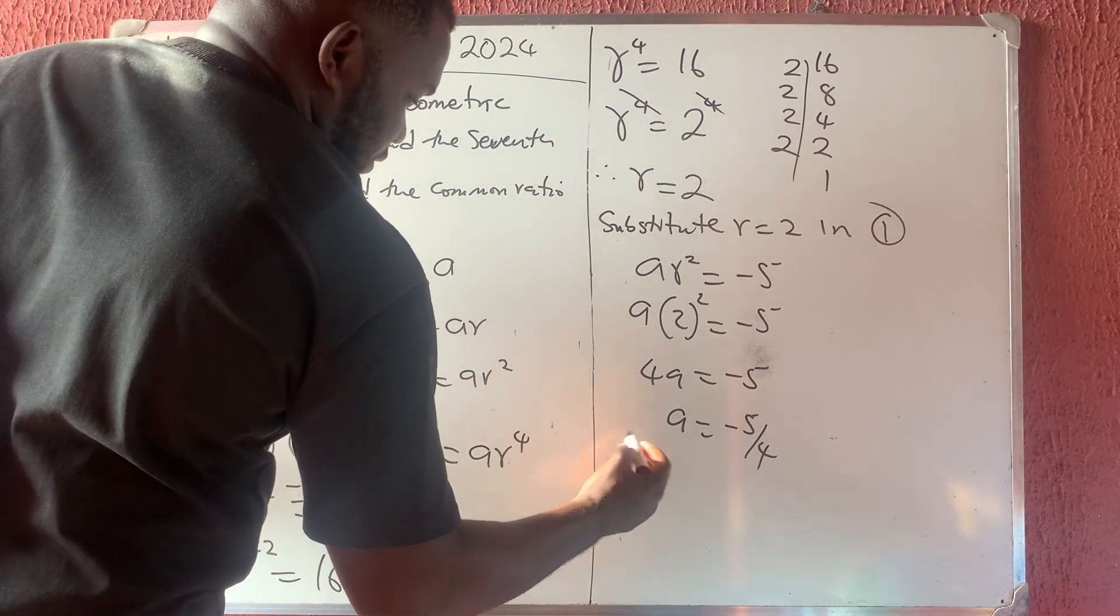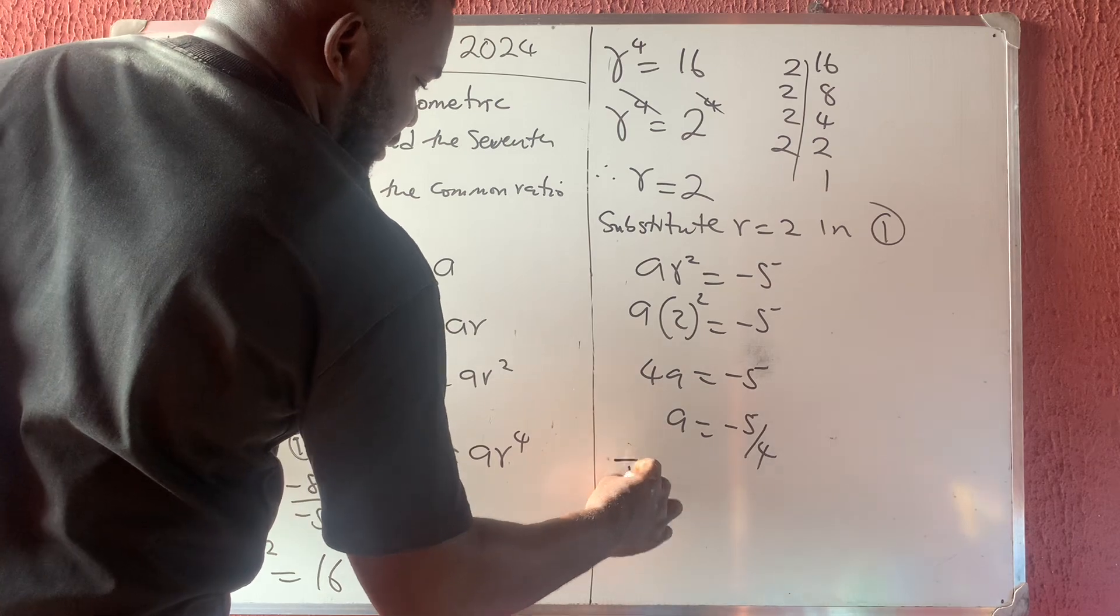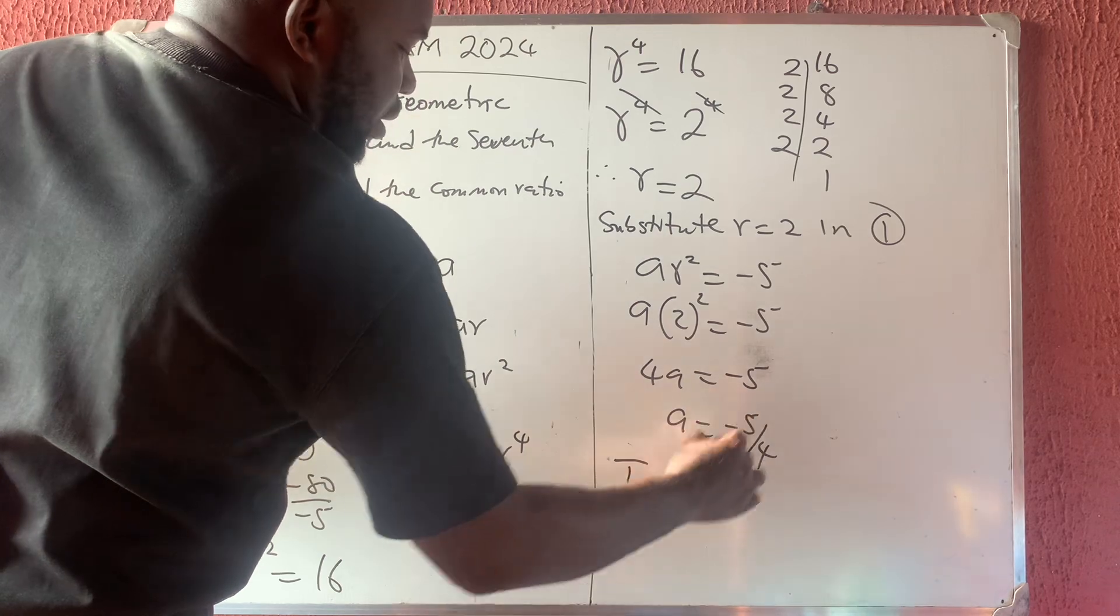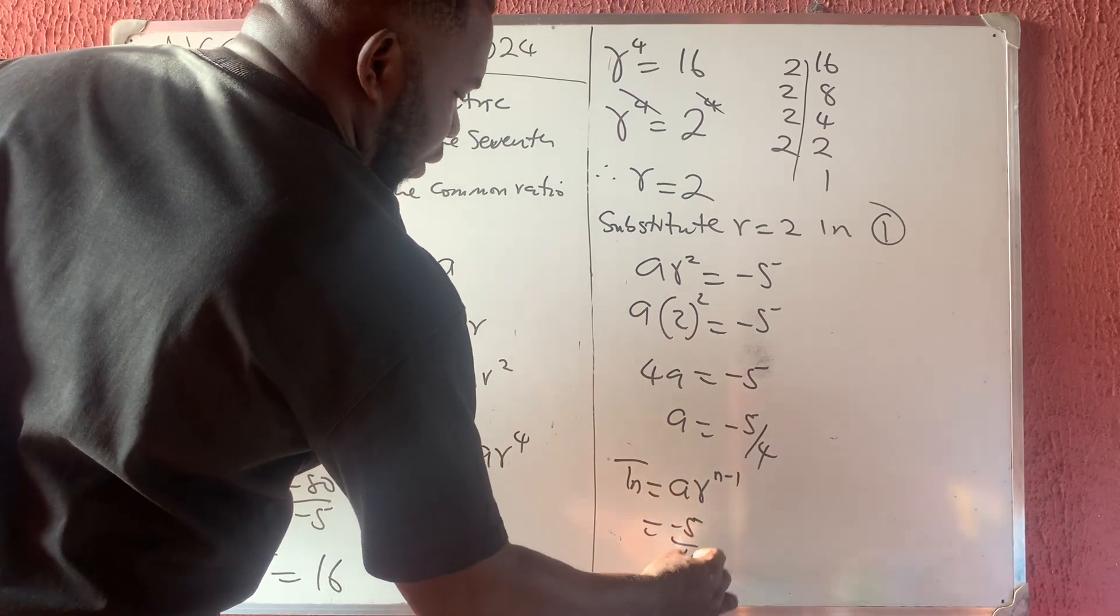They can ask you to find the Nth term of the geometric sequence. To find the Nth term of the geometric sequence is for you to use your formula. And the formula says that TN is equal to A R raised to the power of N minus 1, which is minus 5 over 4.